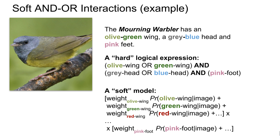Our model takes a softer approach, replacing the hard-OR by a weighted sum and the hard-AND by a product of probabilities. Also note that the soft model assigns a zero weight for irrelevant attributes in a group, like the red-wing in this example.